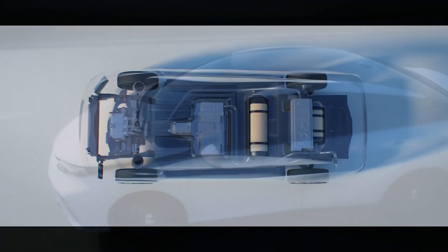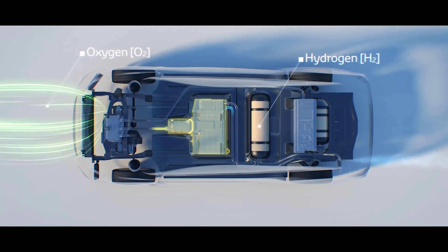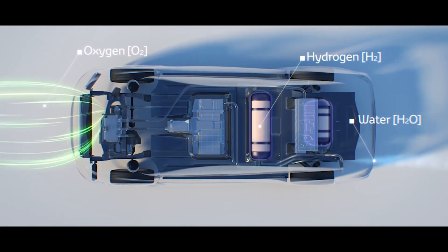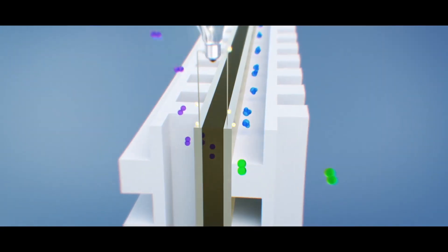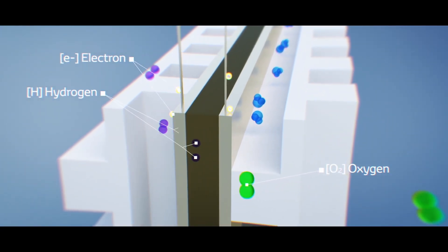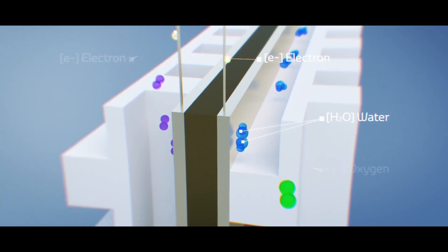To power the Mirai, the hydrogen stored within the tanks is combined with oxygen from the atmosphere within the Mirai's fuel cell stack. This creates a chemical reaction that produces two things: electricity and water.